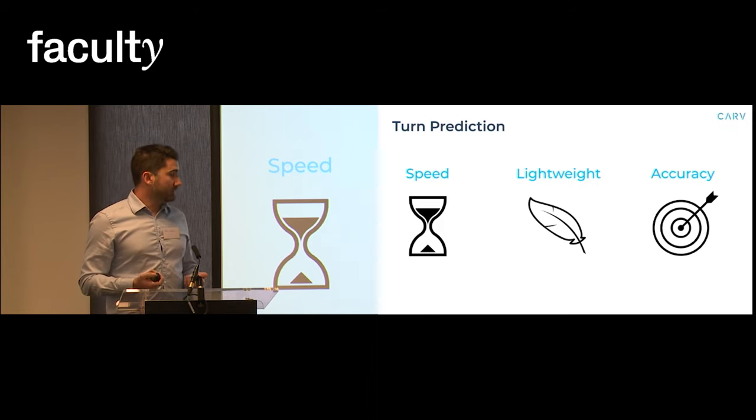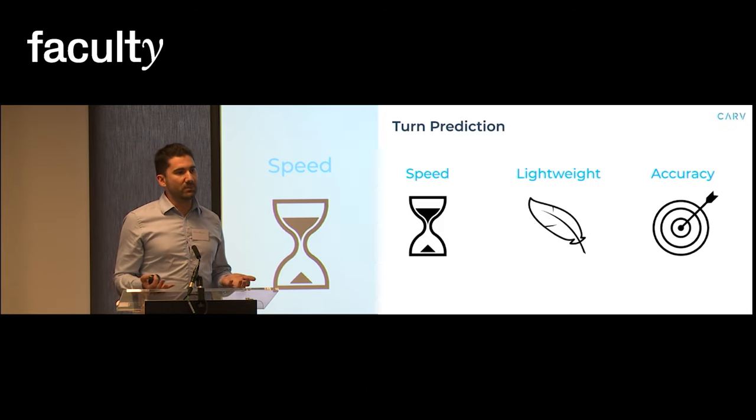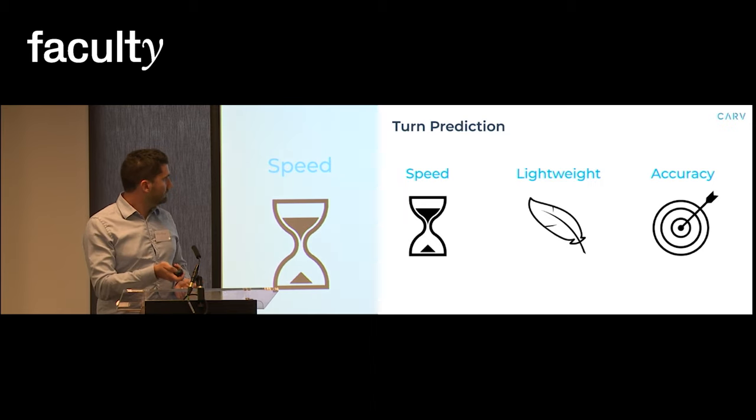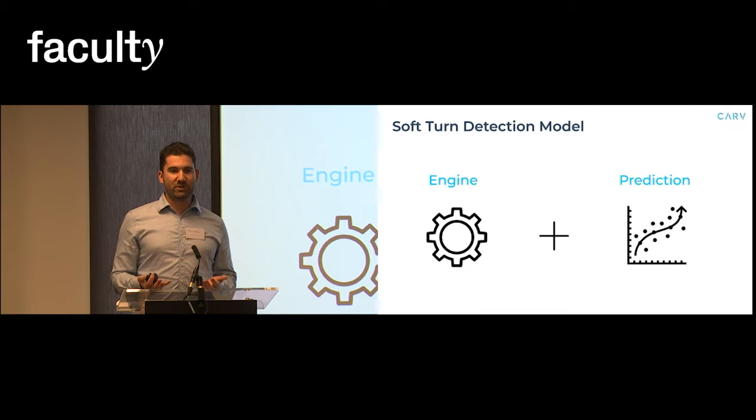And in addition, the model needs to be quite accurate so that it can provide good quality feedback to the skier. Considering all these trade-offs, the solution I came up with, which I call a soft turn detection model, is coming on the next slide.